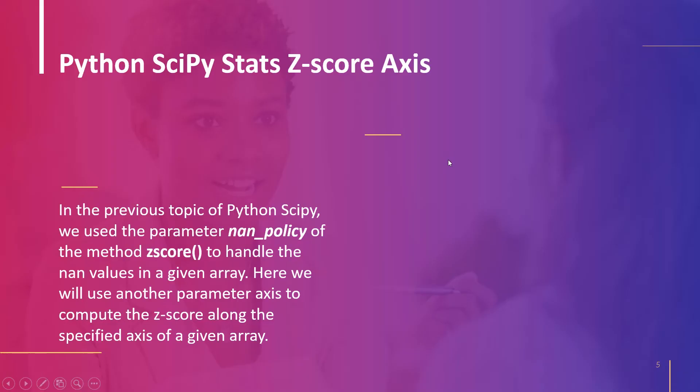The next topic is Python scipy stats z-score axis. Here we will compute the z-score along a chosen axis of a given array using the axis parameter. The axis parameter accepts two values: 0 and 1, representing different axes of the array. By default, the method computes the z-score along axis 0. Axes are defined for arrays with more than one dimension. A two-dimensional array has two axes: axis 0 running vertically downwards across rows, and axis 1 running horizontally across columns.